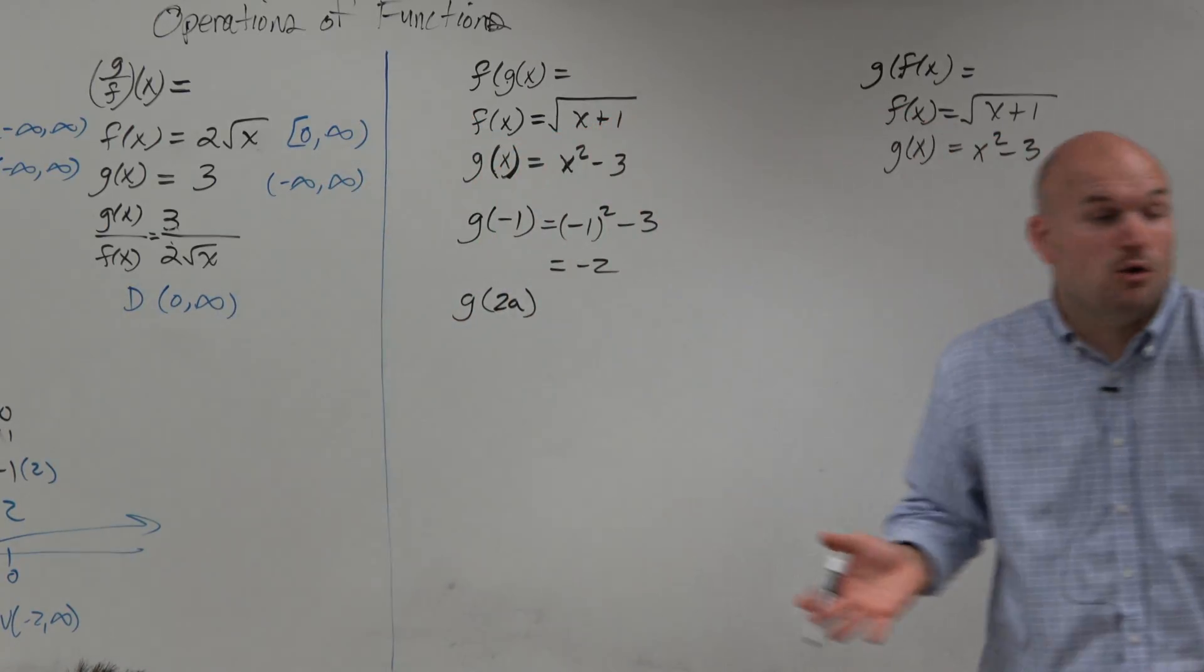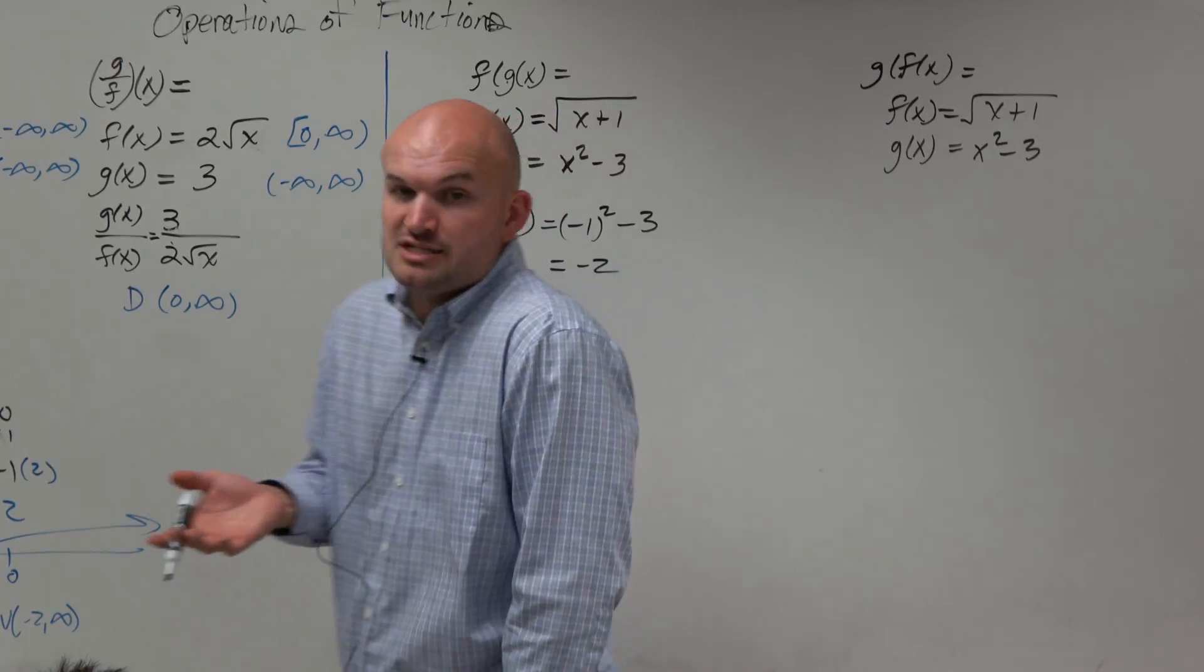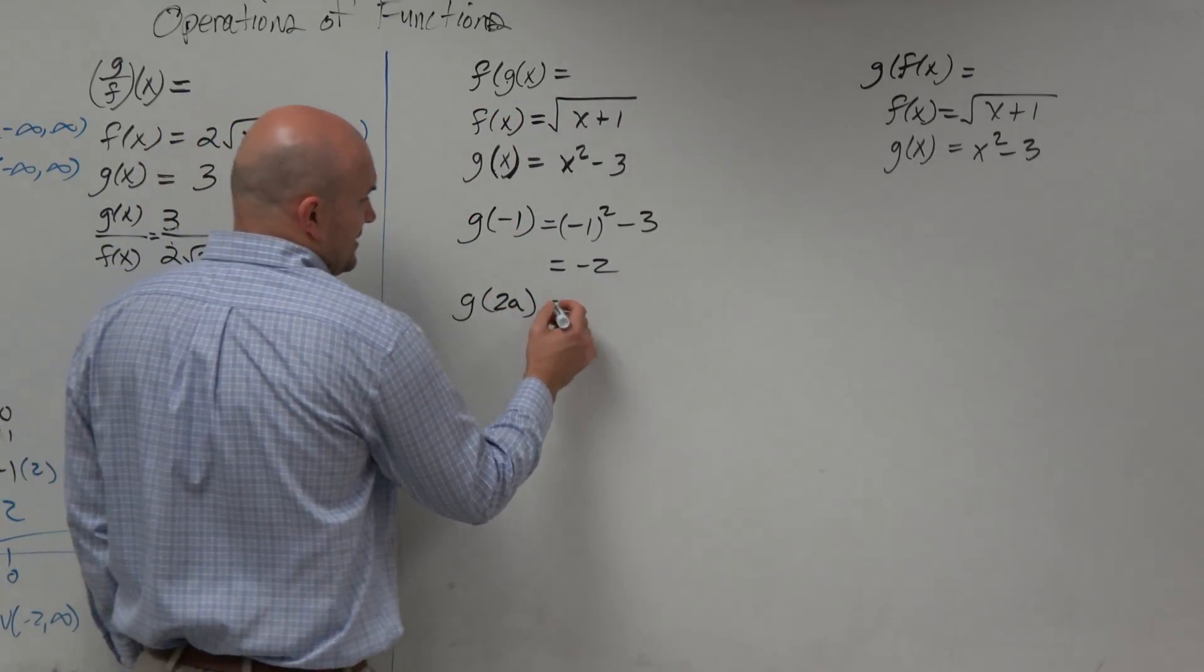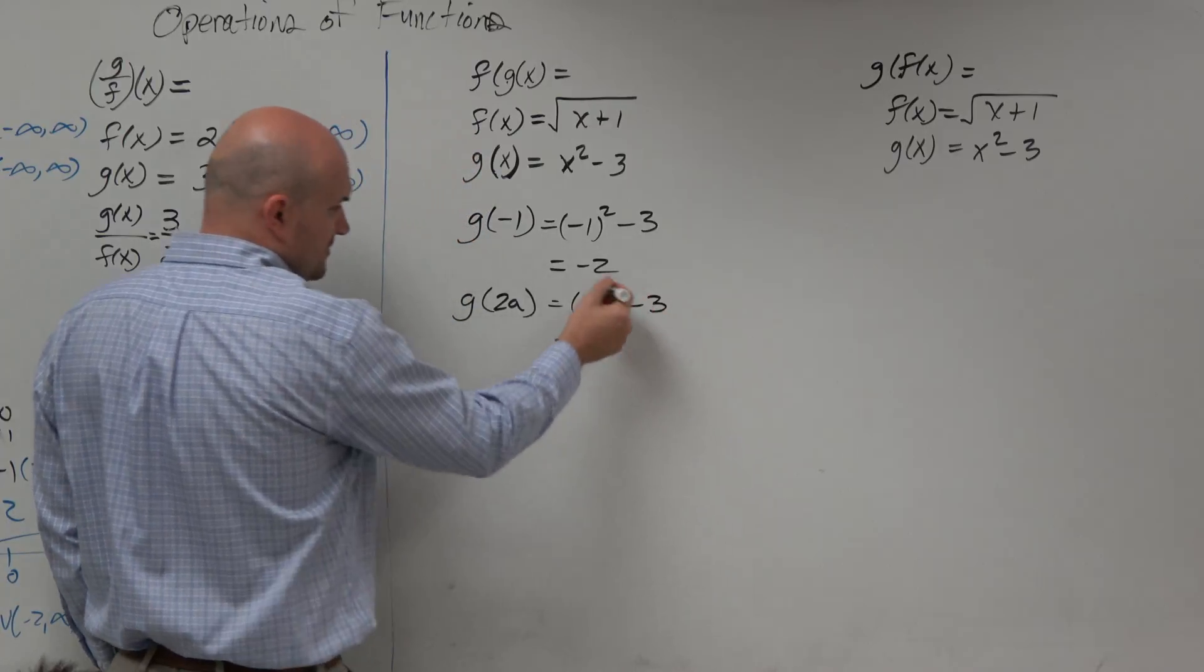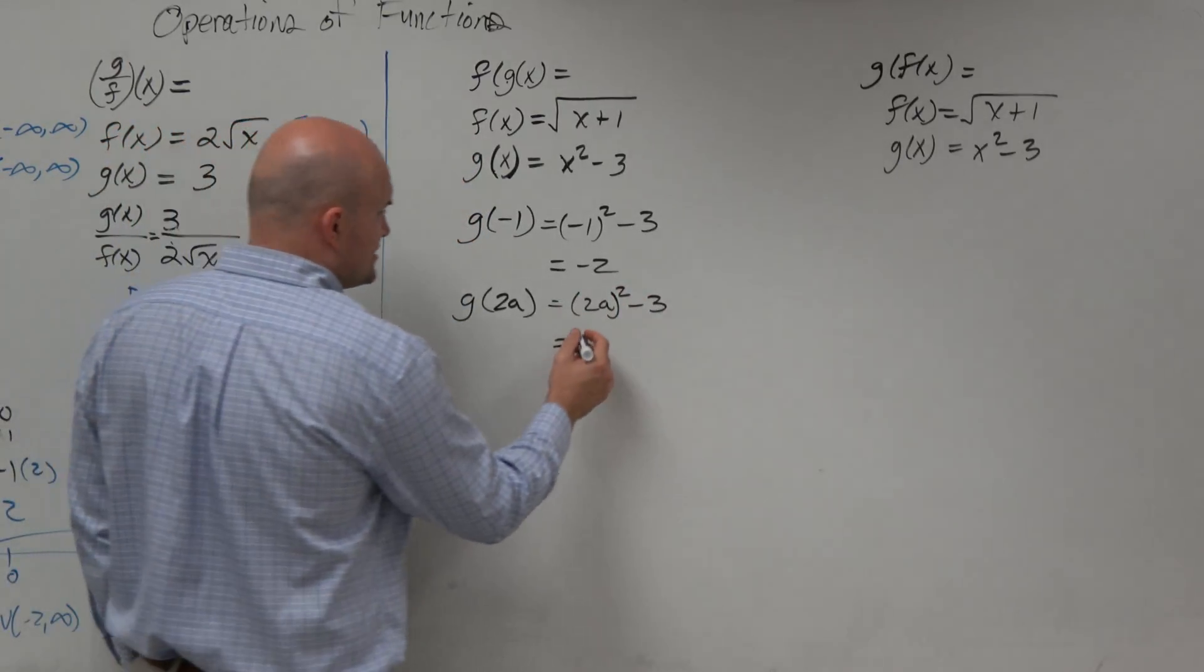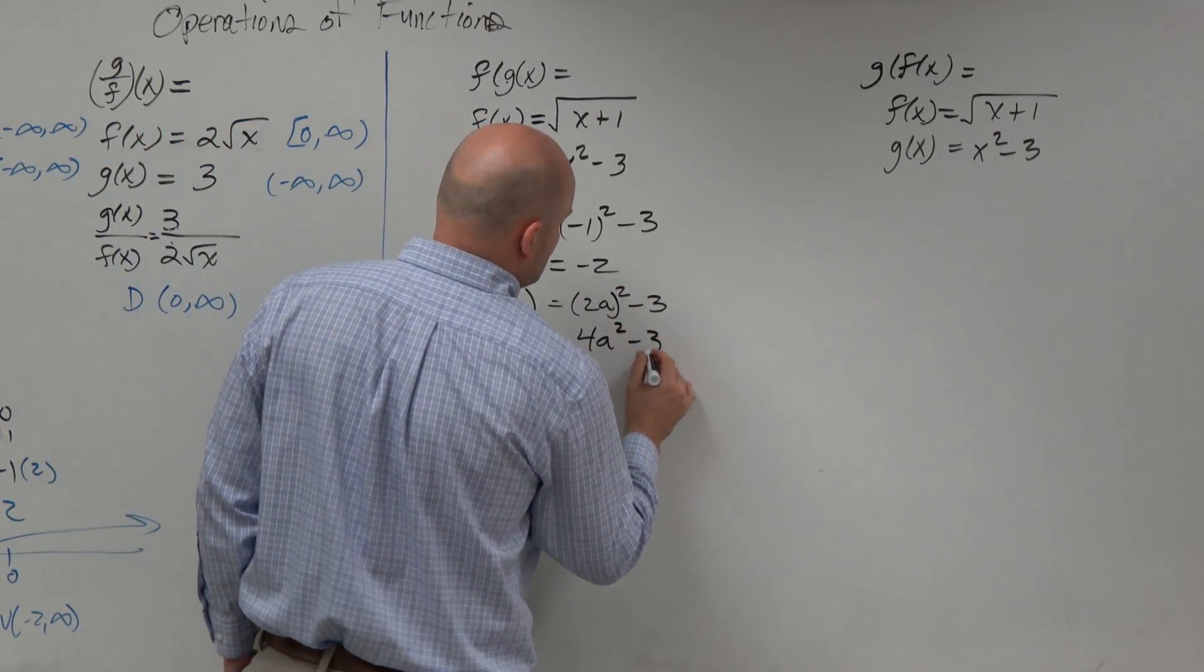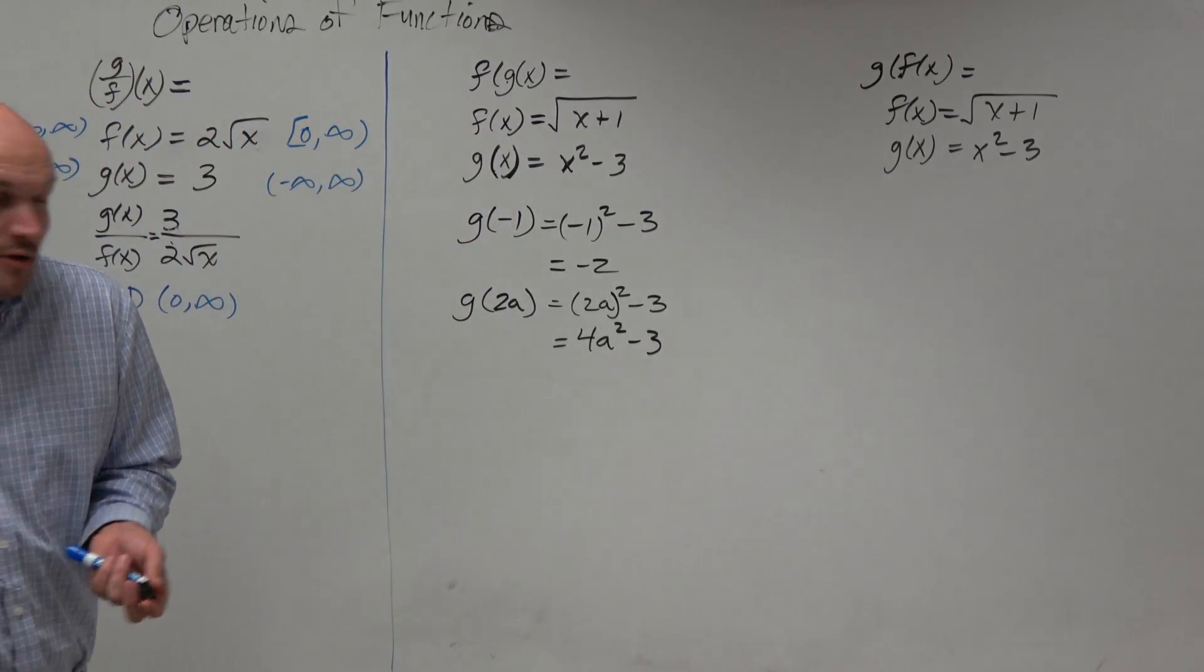Right? We said, oh, we can plug in more things than just numbers. Why don't we plug in an expression? So you plugged in 2a. And then you had to simplify it. So 2a squared is going to be 4a squared minus 3. Right? So then my question to you is,